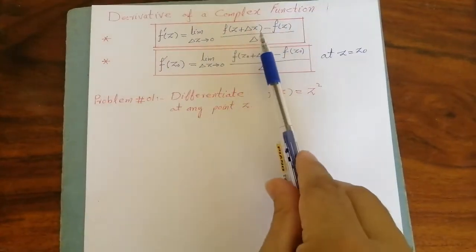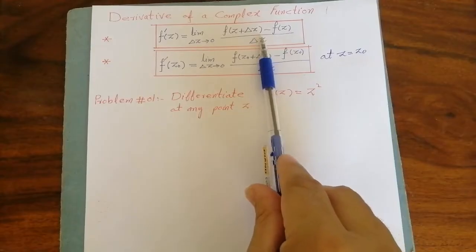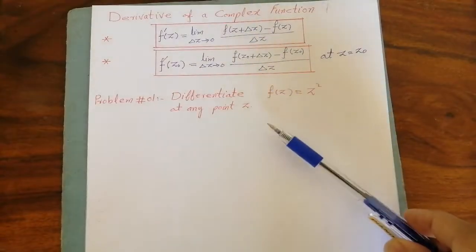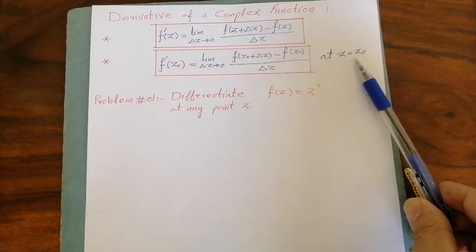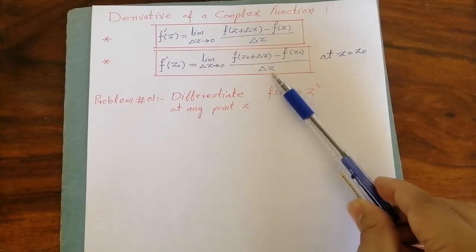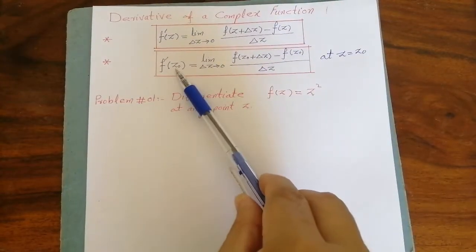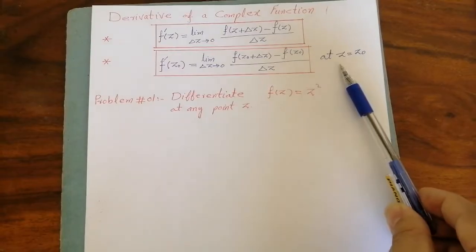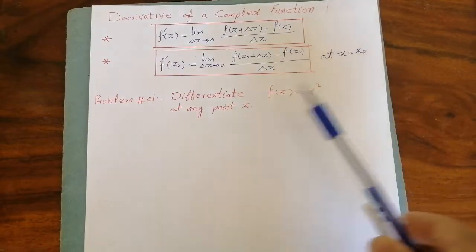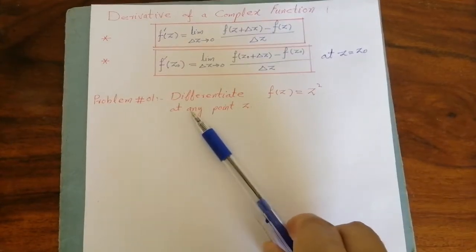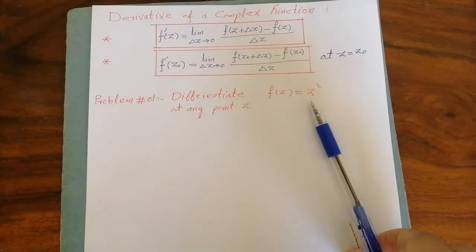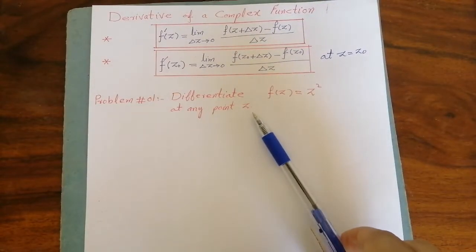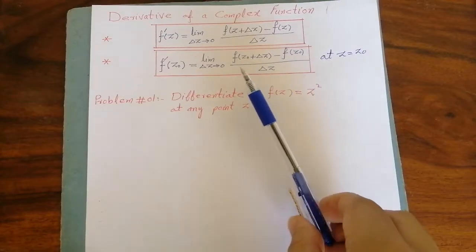In a simple way we can use only the first formula to get the answer, and finally in the answer we can put z equal to z naught and we will get the derivative of the function at the point z equal to z naught. Now let us solve this problem: differentiate f of z equal to z square at any point z by using the definition.